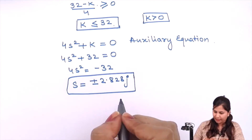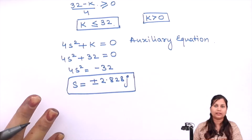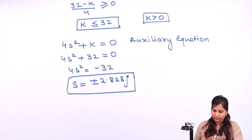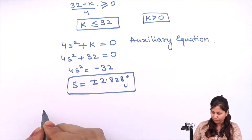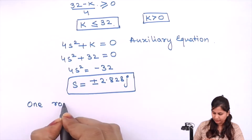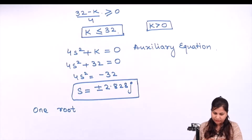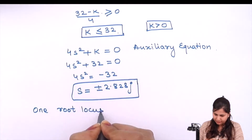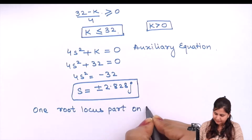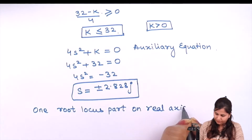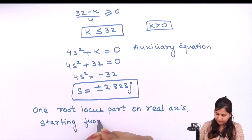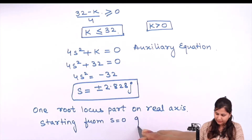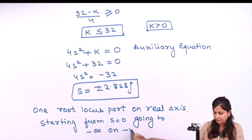Using the auxiliary equation from the s² row with K = 32: 4s² + 32 = 0, giving s² = -8, so s = ±2.828j. These are the intersection points of the root locus with the imaginary axis. The real axis portion of the root locus extends from s = 0 to -∞ along the negative real axis.